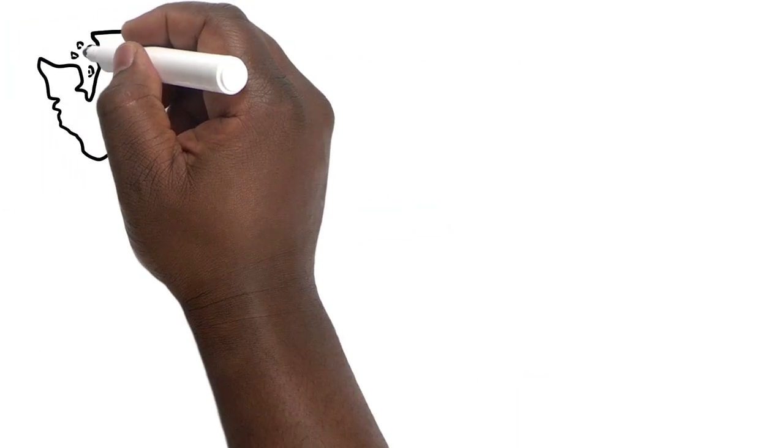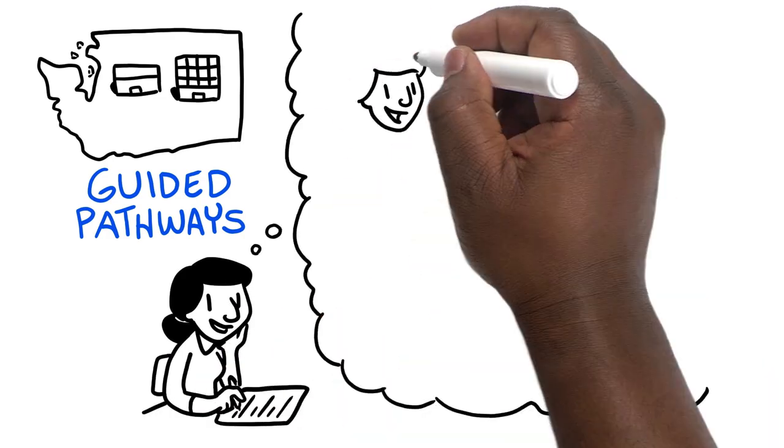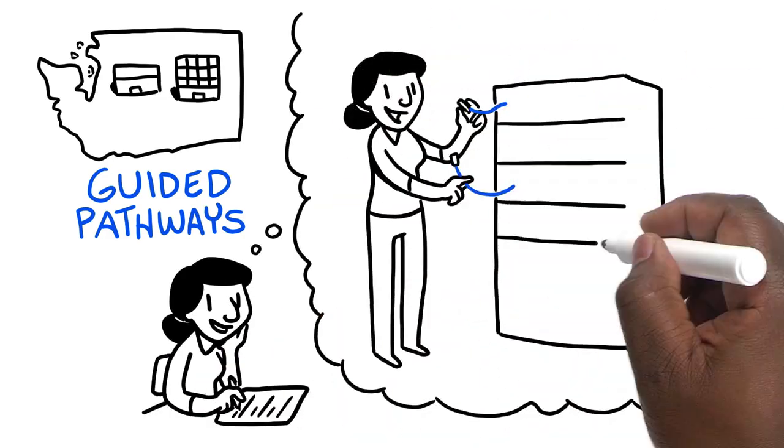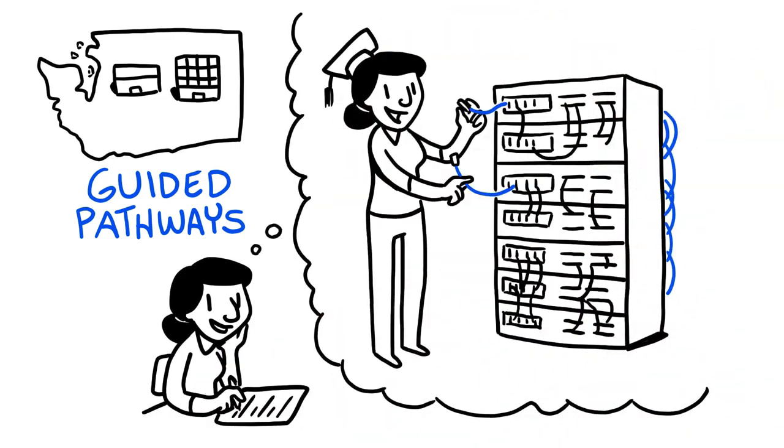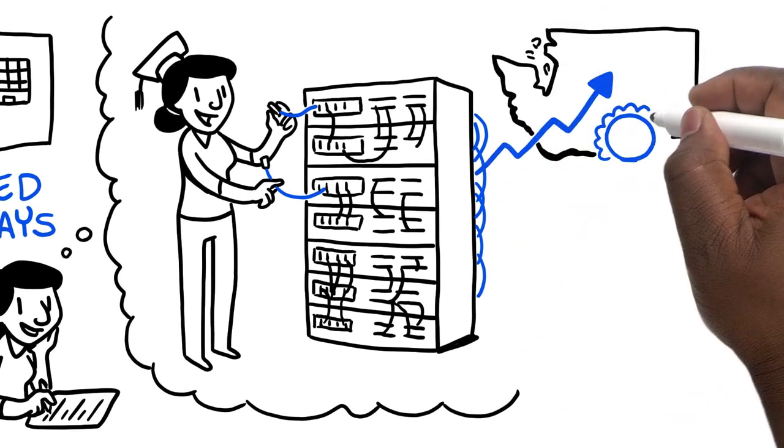Washington's community and technical colleges are pursuing Guided Pathways to help students achieve their dreams and launch their careers. As more students graduate and move into their careers, they lift our economy with them. And when our students succeed, our state succeeds.